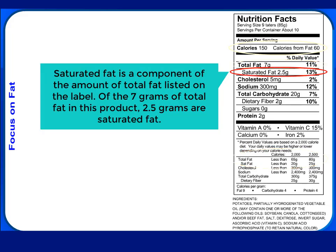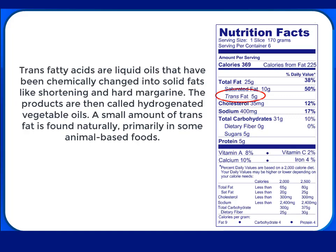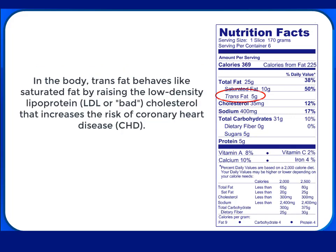Saturated fat is a component of the total fat listed on the label. Of the 7 grams of total fat in this product, 2.5 grams are saturated fat. On July 9th of 2003, the Food and Drug Administration published a final rule requiring manufacturers to list trans fatty acid, or trans fat, on the Nutrition Facts panel of conventional foods and some dietary supplements. Trans fatty acids are liquid oils that have been chemically changed into solid fats like shortening and hard margarine. The products are then called hydrogenated vegetable oils. A small amount of trans fat is found naturally, primarily in some animal-based foods. In the body, trans fat behaves like saturated fat by raising the low-density lipoprotein, or LDL — the bad cholesterol — that increases the risk of coronary heart disease, or CHD.